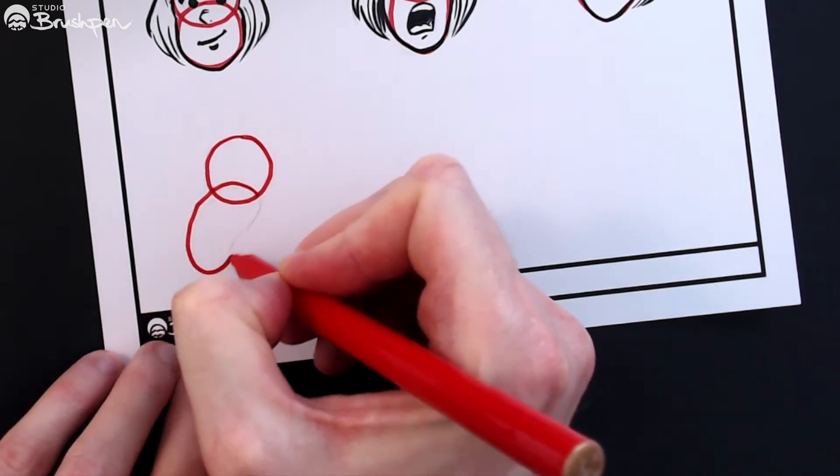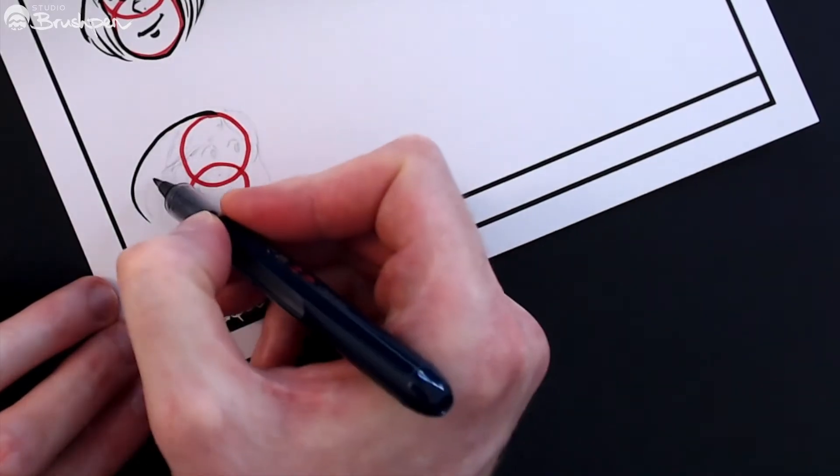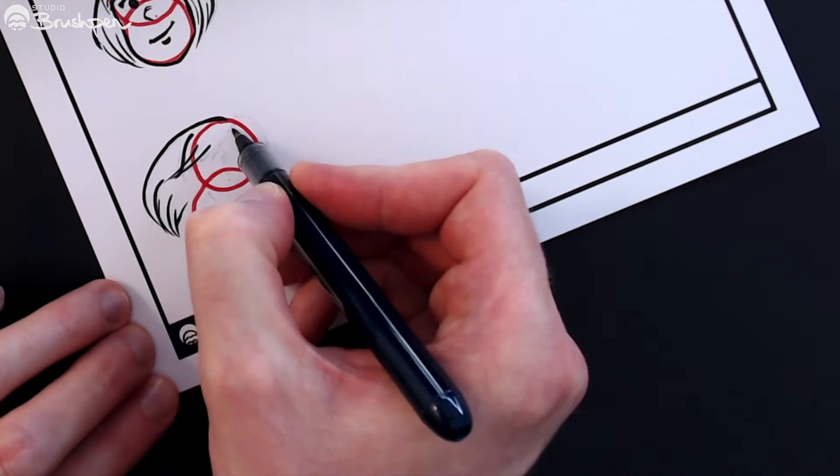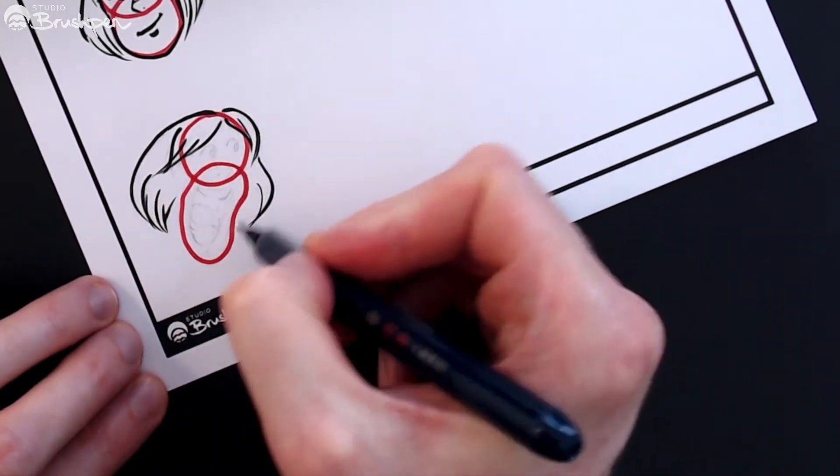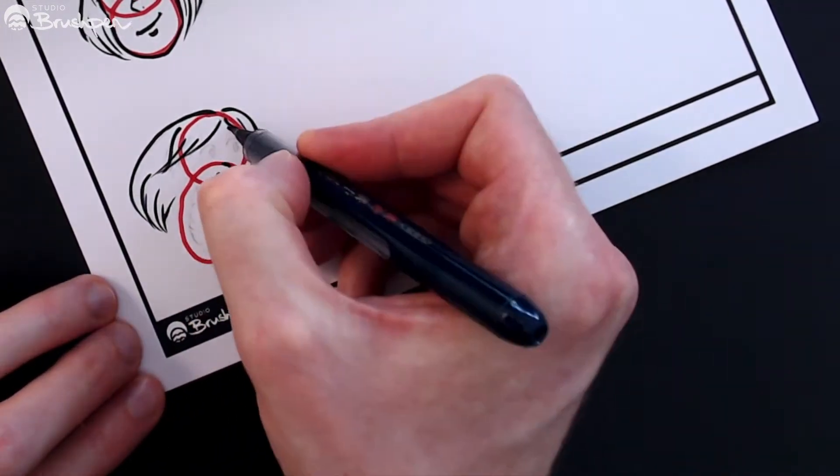So applying that rule, we can make our lower shape as exaggerated as we like. As long as the upper circle remains consistent, our character will still be recognizable.